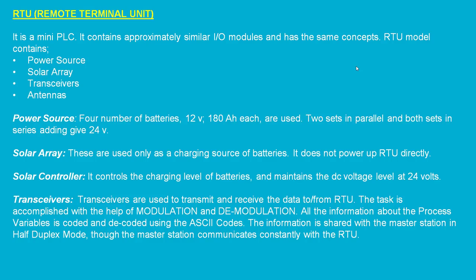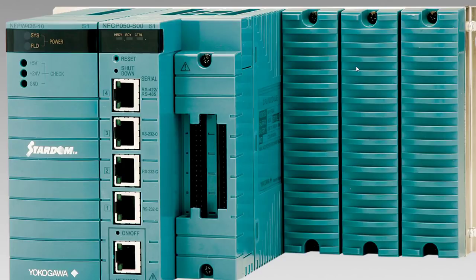So you might now understand what is actually RTU and why we need it. RTU contains different equipment and different components in itself. One is the power source, and in most cases the power source is a solar array. If you have electricity, then you can have redundant electricity — you are having a solar system itself to convert solar energy into electrical energy.